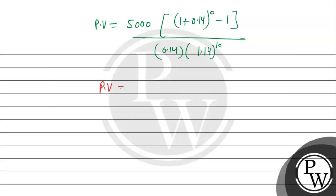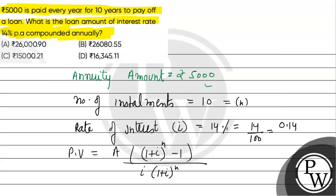So present value will be equal to rupees 26,080.55 approximately. So from here, option B is your required answer. This is the final answer.